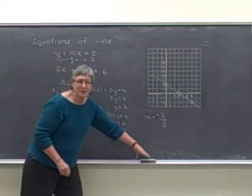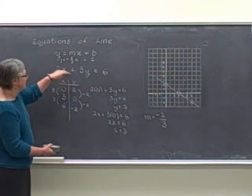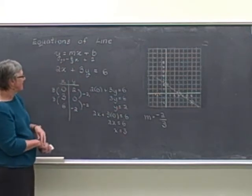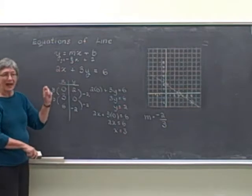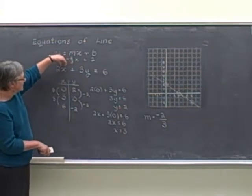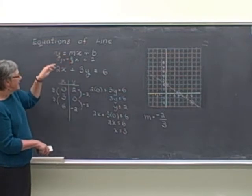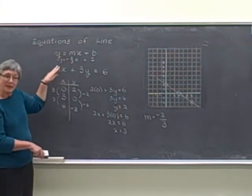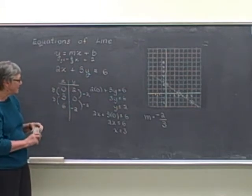Some of you may be used to, when you see an equation that has the x and y on one side, solving for y, so that you put it in slope-intercept form. And we'll look at that in just a minute. But notice how when the x and y are on the same side of the equal sign, it's fairly easy to find the y and the x-intercepts, and then it's fairly easy to draw the graph from just those two points.